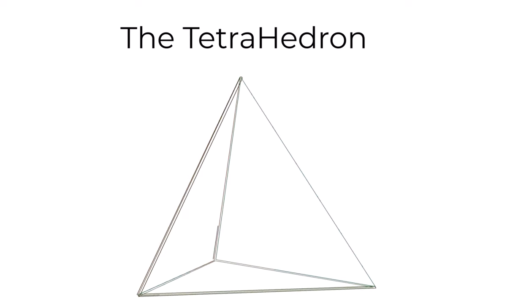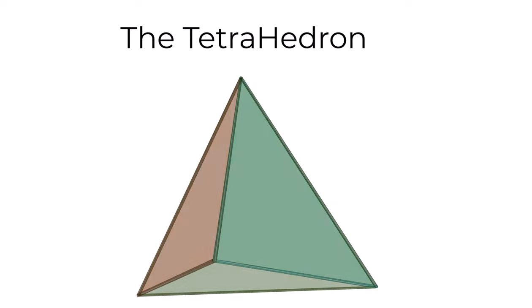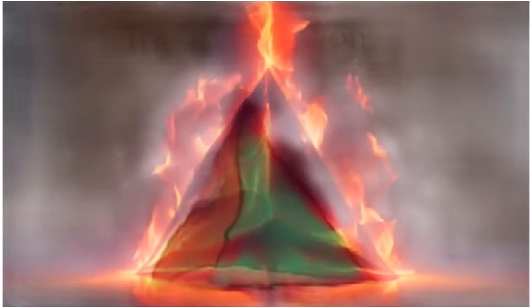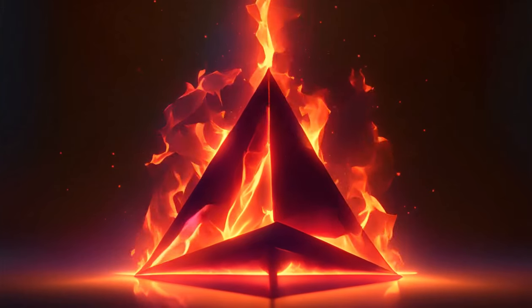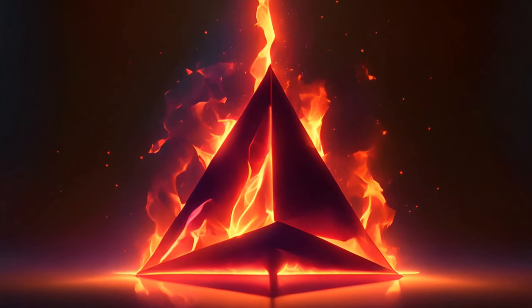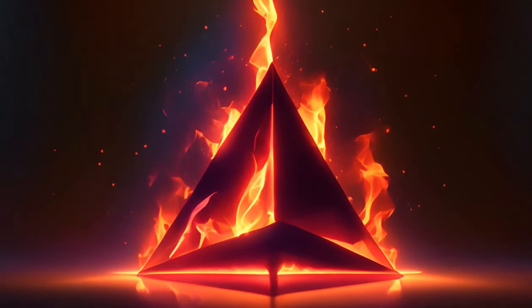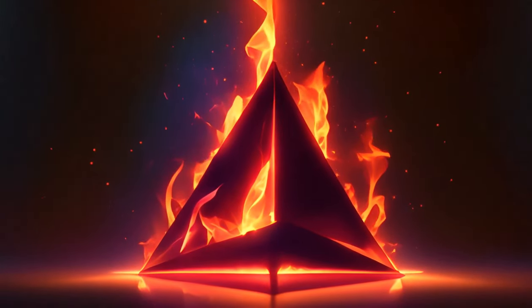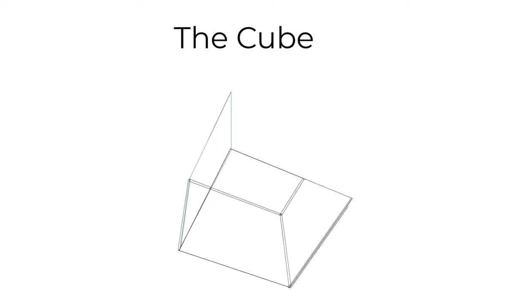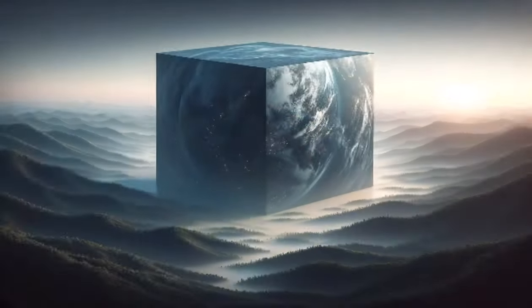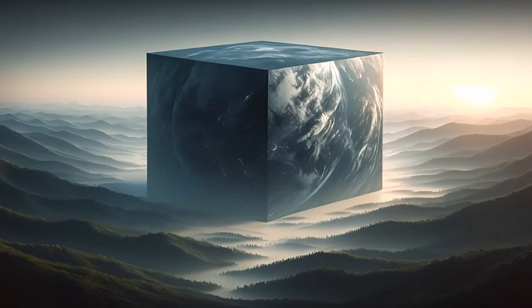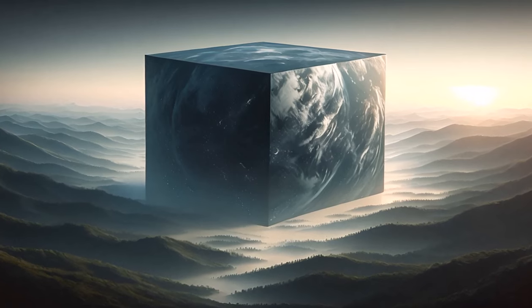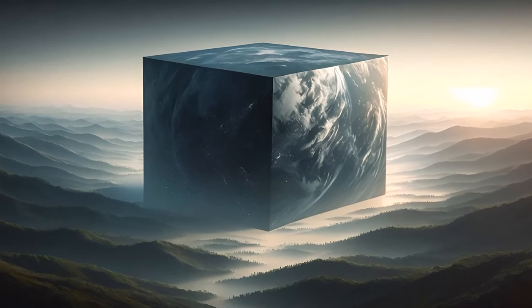The tetrahedron, a shape with four triangular faces, embodies the element of fire with its sharp edges and pointed forms, representing transformation and energy. The cube, consisting of six square faces, stands as the epitome of earth stability, symbolizing solidity and foundational strength.